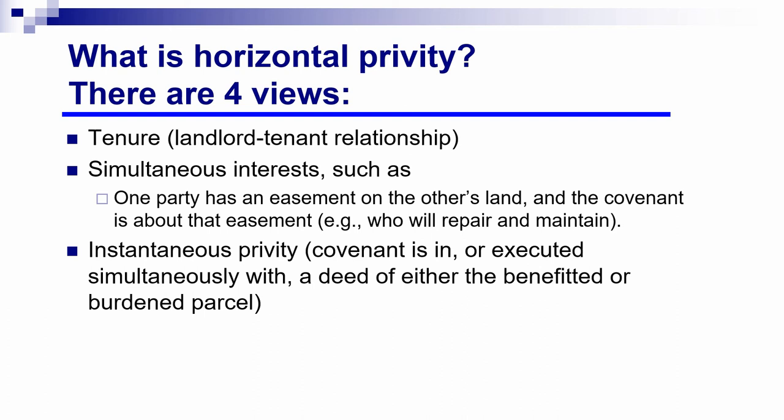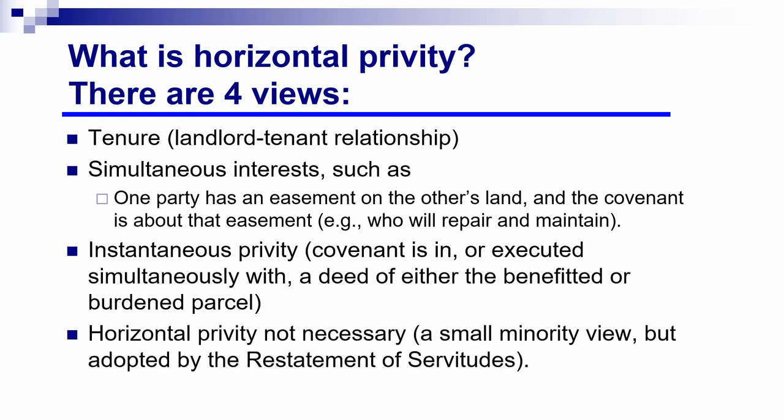The third kind of horizontal privity I call instantaneous privity: the covenant is either in or executed simultaneously with a deed of one of the parcels of land — either the benefited or the burdened parcel. In other words, one party is transferring some land to the other and they put the covenant in the deed or enter into it at the same time the deed is delivered. The final view is only a small minority position, but adopted by the Restatement of Servitudes: that horizontal privity simply isn't necessary at all. Not many courts have accepted that view so far.